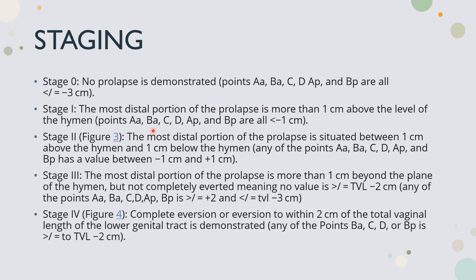In Stage 1, all points Aa, Ba, C, D, Ap, and Bp are at minus 1 or above — one centimeter above the hymen. Stage 2: the most distal portion of the prolapse is situated between one centimeter above and one centimeter below the hymen, meaning measurements lie between minus 1 and plus 1. If points are one centimeter above the hymen they are minus 1, at the level of the hymen is 0, and one centimeter below is plus 1. Stage 2 measurements cannot go beyond plus 1 centimeter.